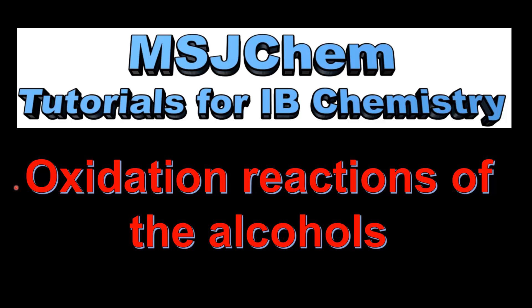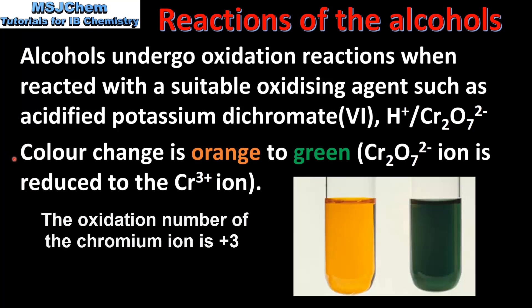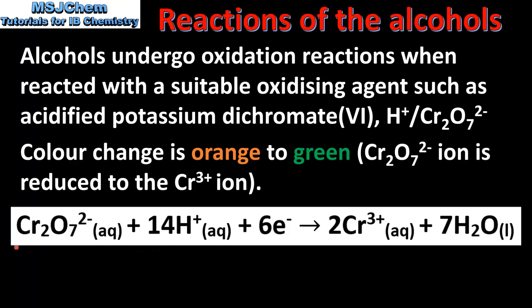This is MSJChem. In this video I will be looking at the oxidation reactions of the alcohols. Alcohols undergo oxidation reactions when reacted with a suitable oxidizing agent such as acidified potassium dichromate. The color change in the reaction is orange to green, as the dichromate ion is reduced to the chromium 3 ion, which we can see here on the right, along with the equation for that reduction reaction.